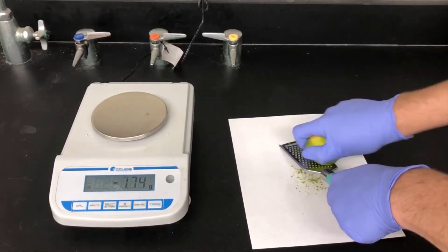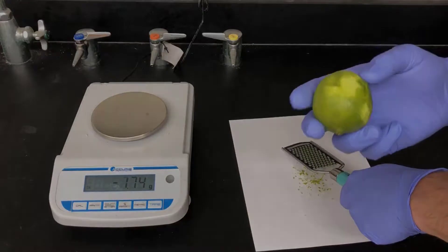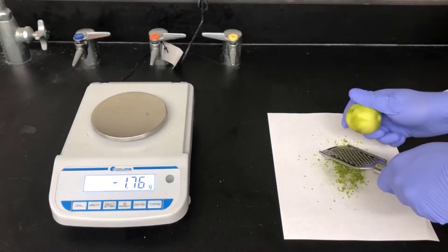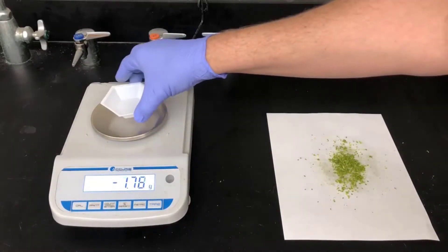I'm grating the lime onto a piece of paper here and that's just a convenient way to catch it. Now I have a pretty good amount of lime zest. I'm going to weigh it out and see how much I have.